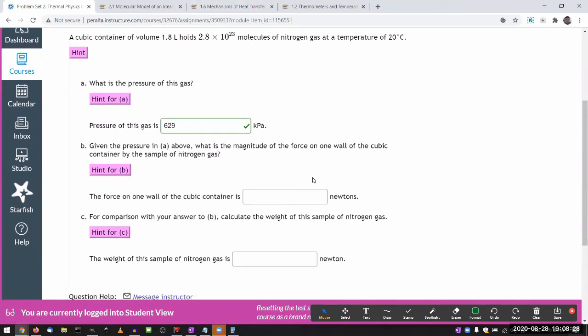All right. So it says, for part B, given the pressure in A above, what is the magnitude of the force on one wall of the cubic container by the sample of nitrogen gas? So I know the relationship between force and pressure. Force, no sorry, that definition of pressure is force per area. So if I need to know the force due to pressure, that will be pressure times the area. So I need the area. So I need the area of one wall.